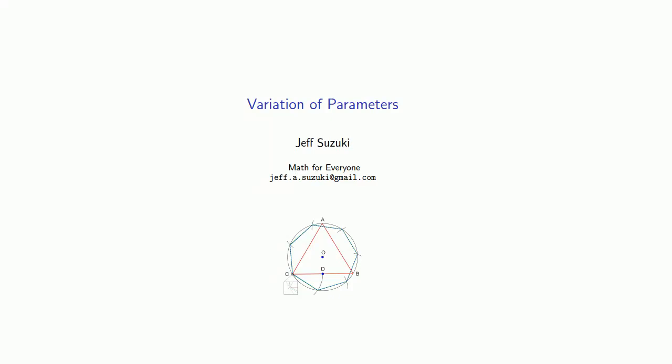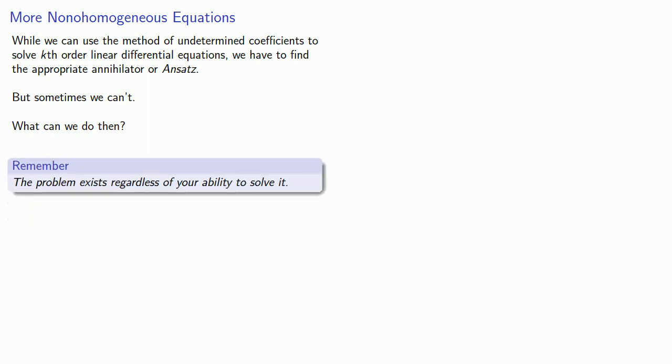Another method of solving differential equations is known as the variation of parameters. While we can use the method of undetermined coefficients to solve kth order linear differential equations, we have to find the appropriate annihilator or ansatz. But sometimes we can't. What can we do then? The problem exists regardless of your ability to solve it.